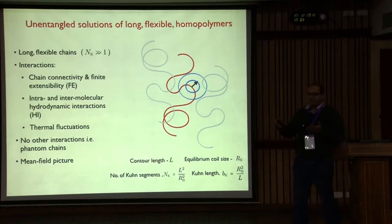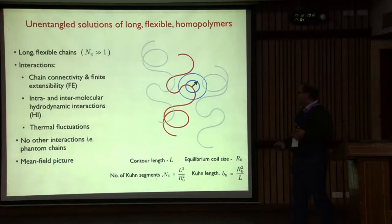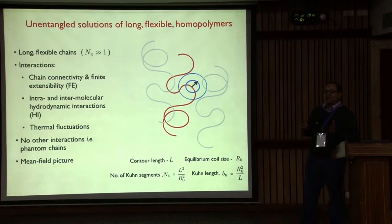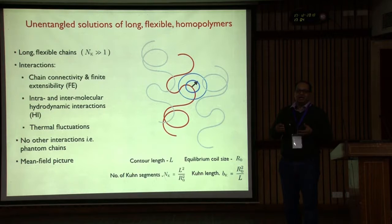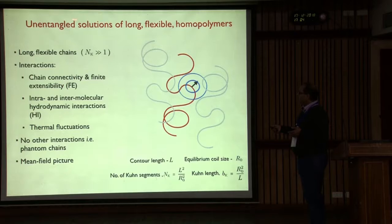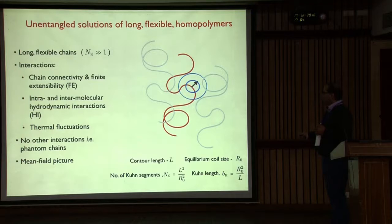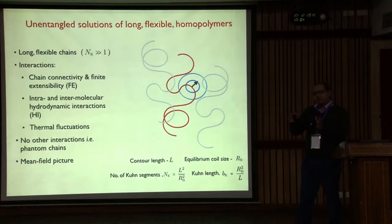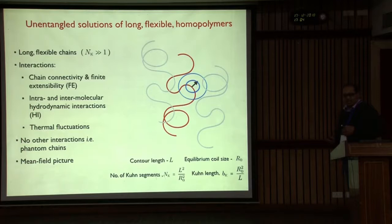We are looking at phantom chains because there are no excluded volume interactions — polymer chains are perfectly welcome to cross themselves or each other. This system represents a polymer solution close to the theta state, where the conventional thinking is that excluded volume interactions do not matter much. Because there are no excluded volume interactions, there are also no entanglements, so I'm looking at unentangled solutions of flexible polymers for all concentrations — theta solutions at concentrations up to about 10 C/C* or 10 times the overlap concentration.